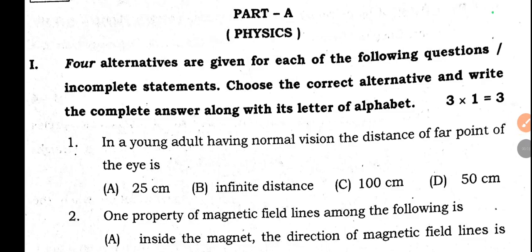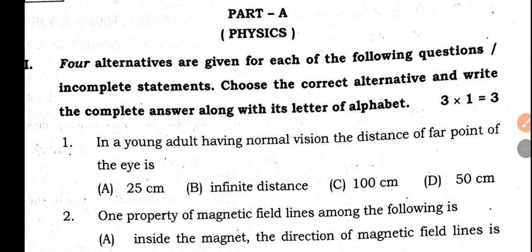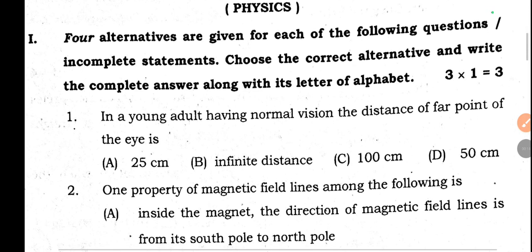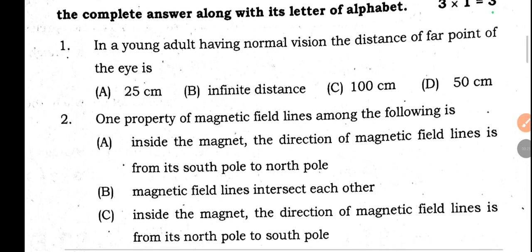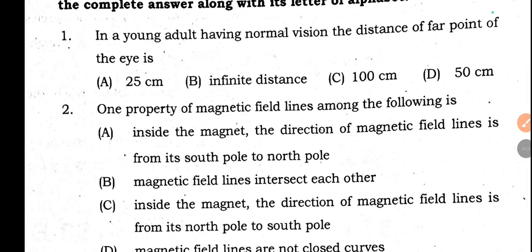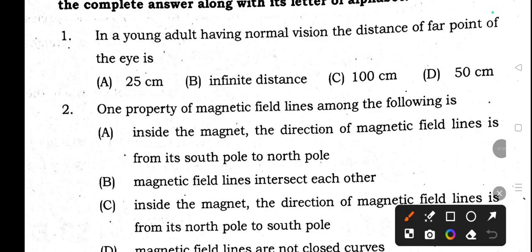Very good morning. Today we are going to discuss the 2025 state level preparatory science question paper provisional key answers, Part A Physics. Let's start. First of all, Question 1: three multiple choice questions, each carrying one mark. First question: In a young adult having normal vision, the distance of far point of the eye is infinite distance.